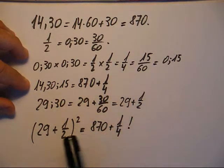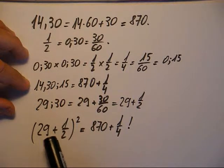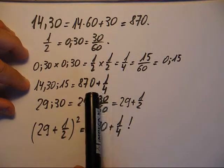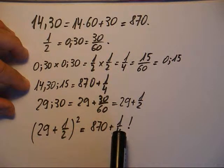On peut vérifier, par exemple à la calculette ou à la main si vous voulez, que 29 plus 1 demi au carré, c'est rien d'autre que 870 plus 1 quart.